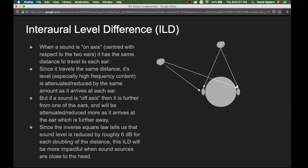Moreover, the inverse square law that talks about how sound is attenuated as it travels a distance through space and through the air tells us that sound level is reduced by roughly six decibels for each doubling of the distance.